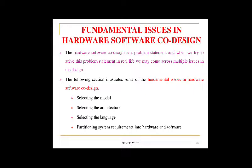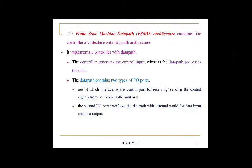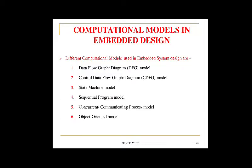Now we will see all six computational models used in embedded systems in detail. The six models are: first, data flow graph (DFG); second, control data flow graph (CDFG); third, state machine model (FSM); fourth, sequential program model; fifth, concurrent or communicating process model; and sixth, object-oriented model.